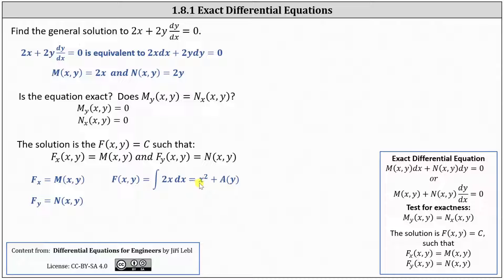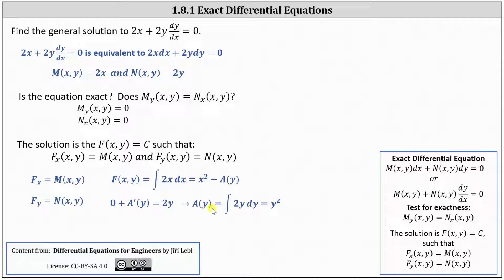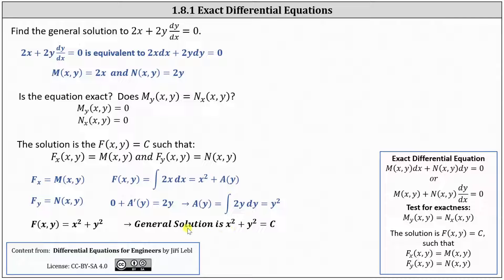Knowing F = x² + a(y), we differentiate with respect to y treating x as a constant, giving zero plus a′(y), which must equal N(x,y) = 2y. So a′(y) = 2y, and integrating both sides with respect to y gives a(y) = y². Therefore the potential function F = x² + y², and the general solution is x² + y² = c.